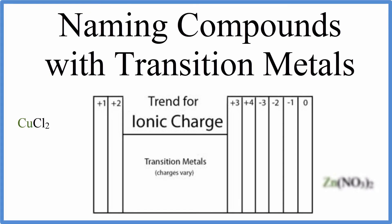To write the name for compounds that have transition metals, we need to take into account ionic charge. In this general table here, you can see the trend for ionic charge. Some are very clear, like group 1, they're all plus 1. Group 2, those elements have a charge of plus 2.